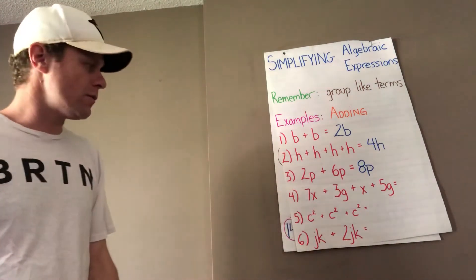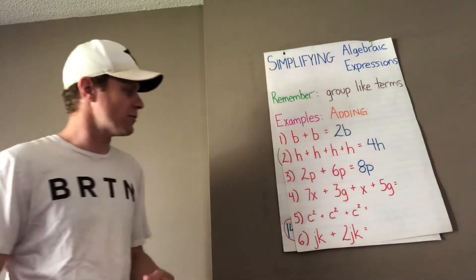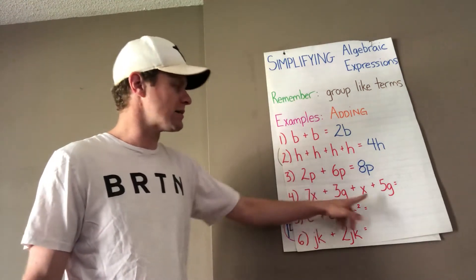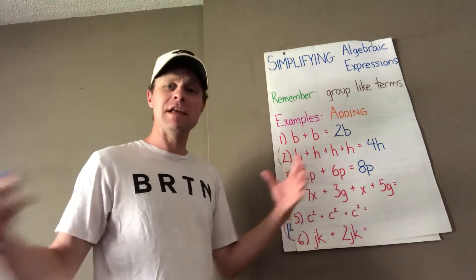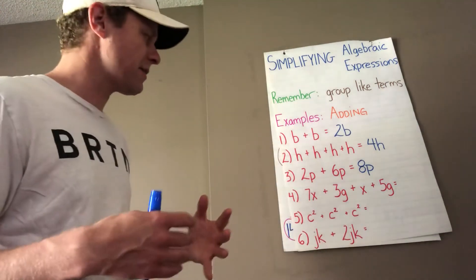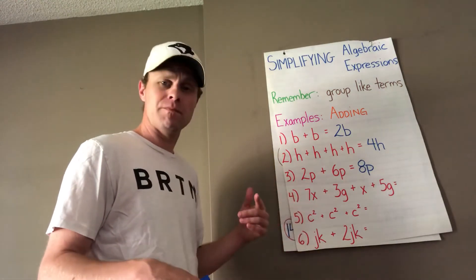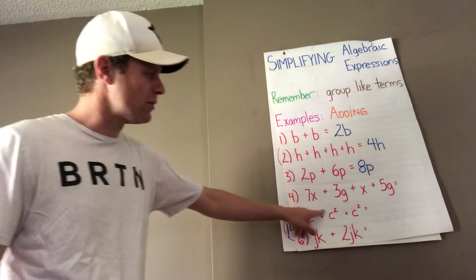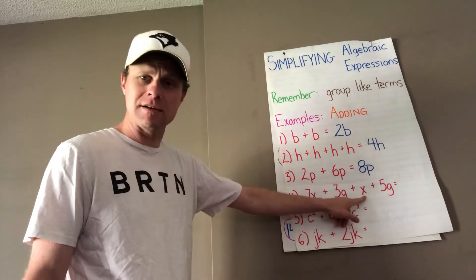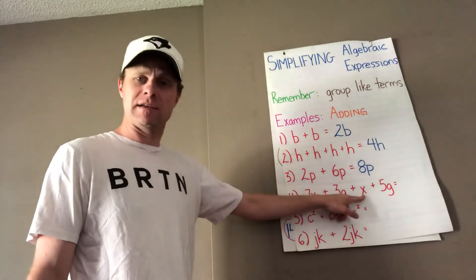So, you can rearrange the question so it says 7x plus x plus 3g plus 5g. Then you put your like terms together or you can just look at them and add them. So you can see that 7x is first, but you have another x here. So what's 7x plus 1x?